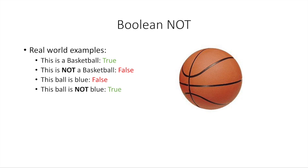Real world example: this is a basketball — true. Now if we reverse it, we say this is not a basketball. Well, this is false, because you're looking at a basketball. So to say this is not a basketball is a false statement. If we say this ball is blue, that's not true, so that's false in Boolean logic algebra. But if we reverse that and we say this ball is not blue, that statement now becomes true. So as you can see, if we add the keyword NOT, we just reverse the value.